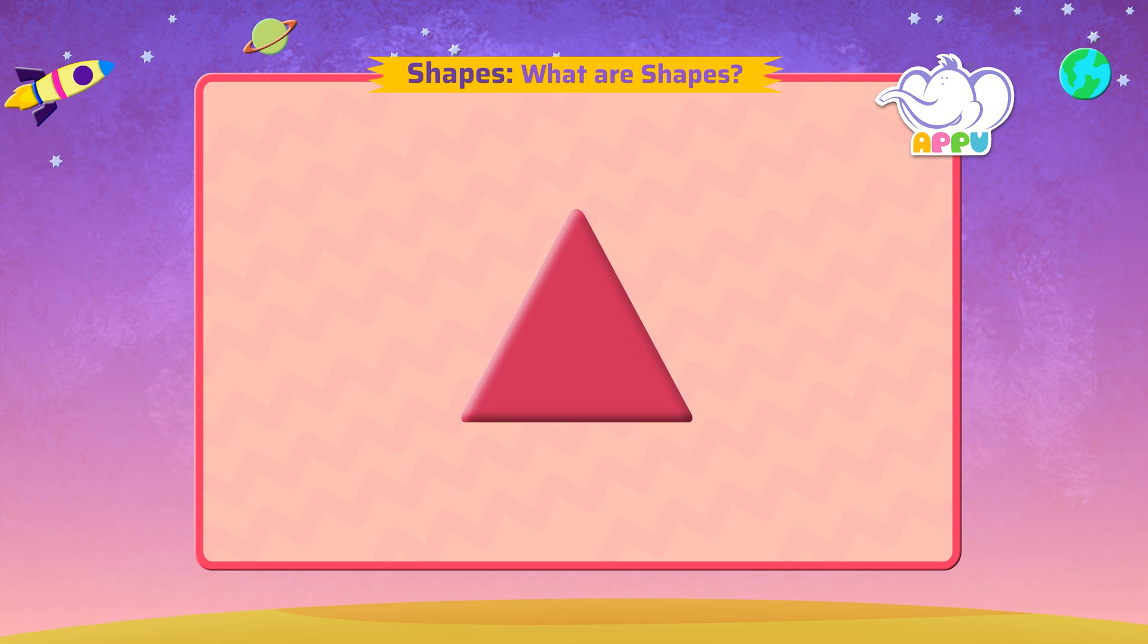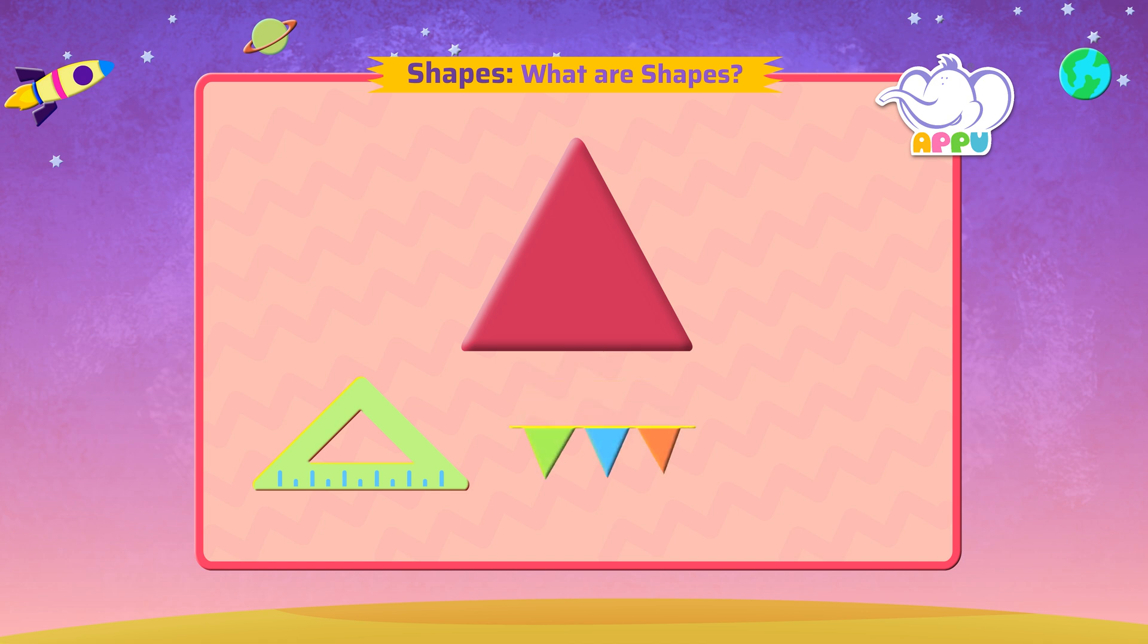Triangle. A triangle is a shape with three sides. You can find it in a set square, a streamer, a wedge of watermelon.